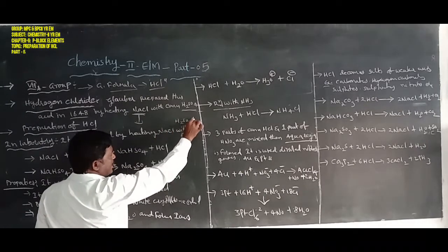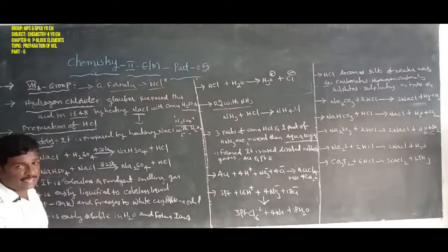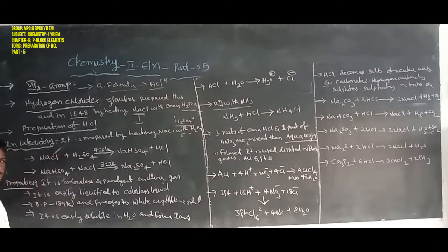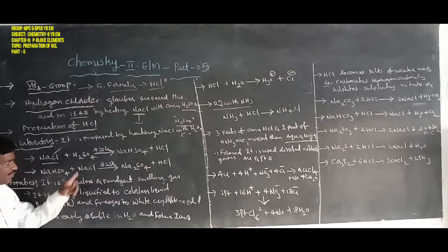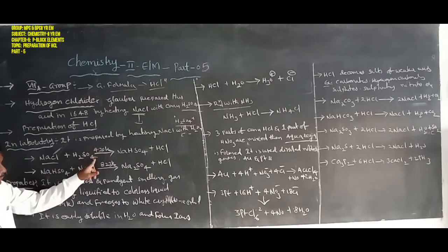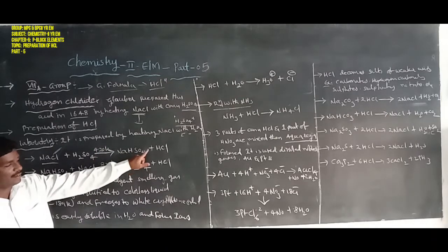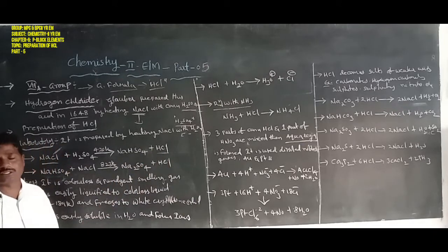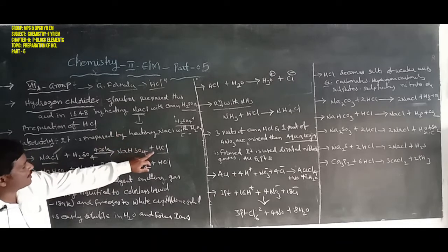In the laboratory, hydrochloric acid is prepared by heating common salt, that is also known as sodium chloride, with concentrated sulfuric acid (H2SO4) at 420 Kelvin temperature. This forms sodium bisulfate and hydrochloric acid, also known as hydrogen chloride (HCl).